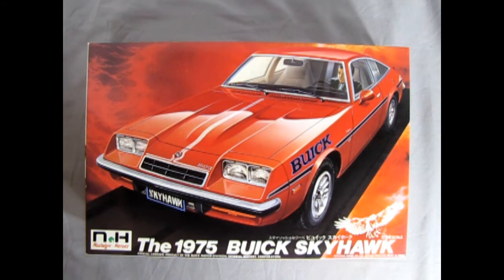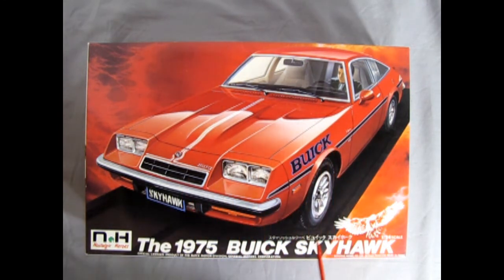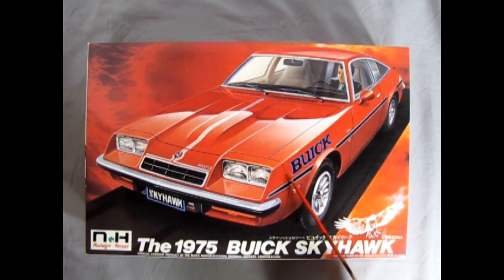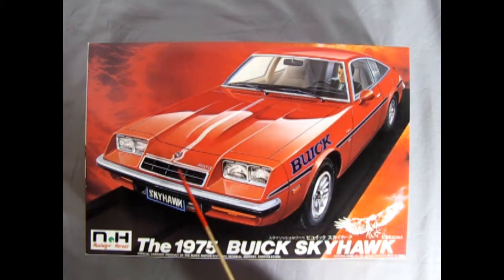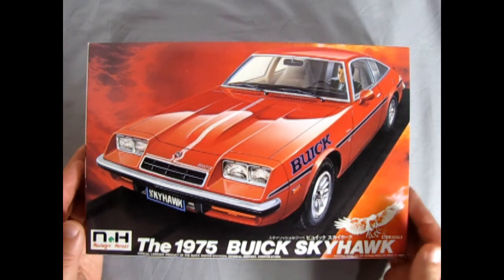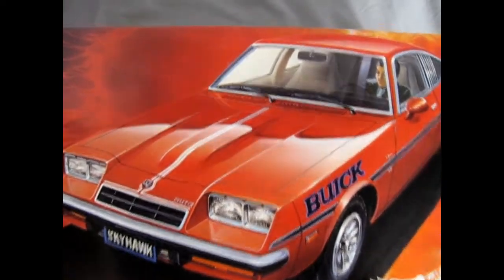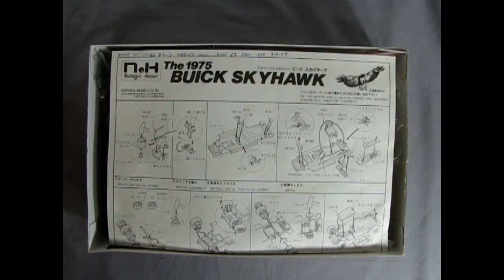One thing that does seem to be missing based on the drawing on the front of the box is the Buick lettering and the black stripe along here, as well as the white pinstripes. So if you're really an expert with doing that, it will enhance the look of this kit. Now let's take a look at our Nostalgic Heroes model kit in 1/24th scale by removing the lid. I'm really curious to see what's in here.